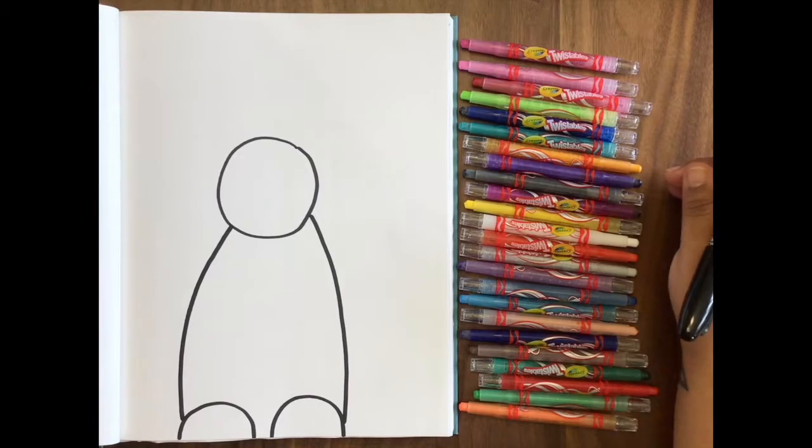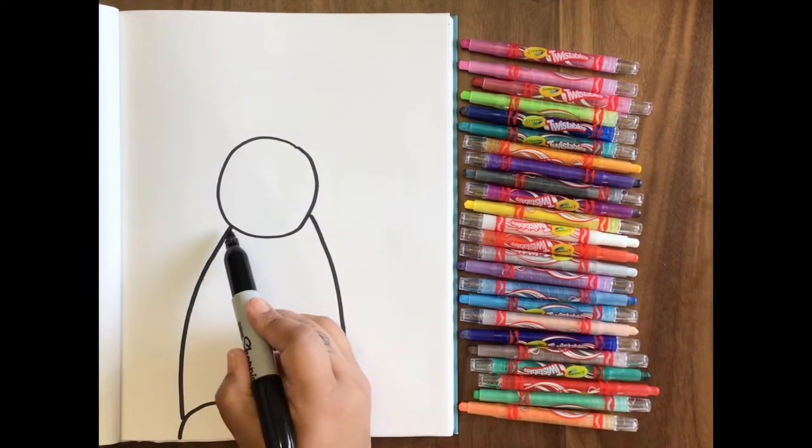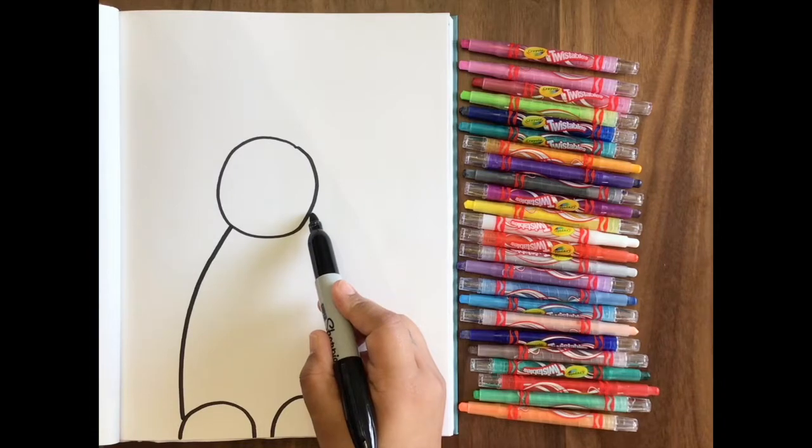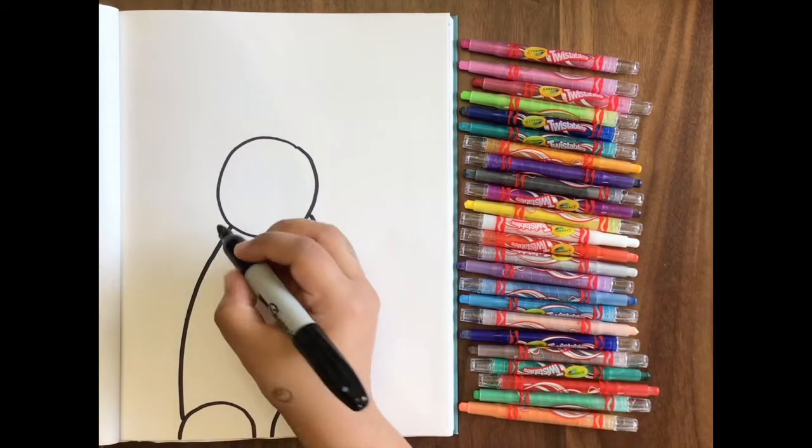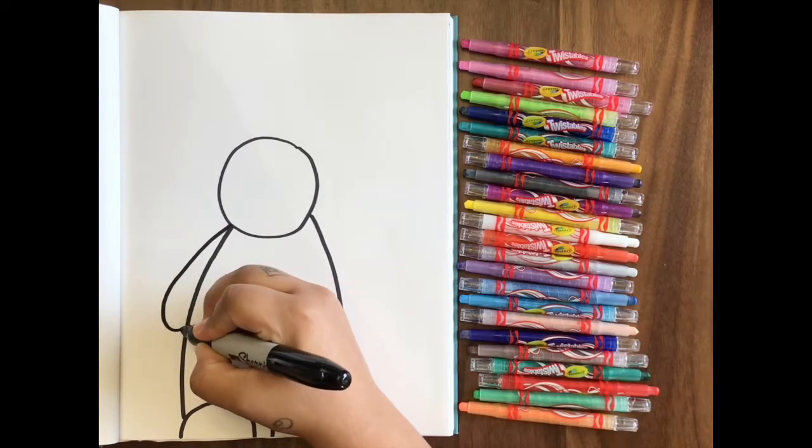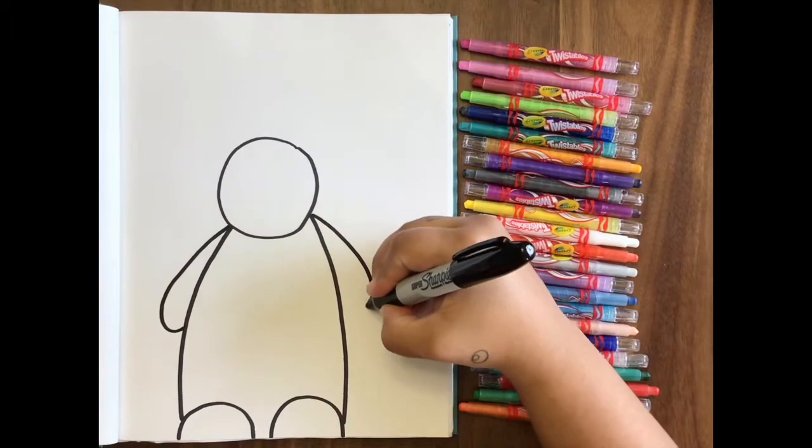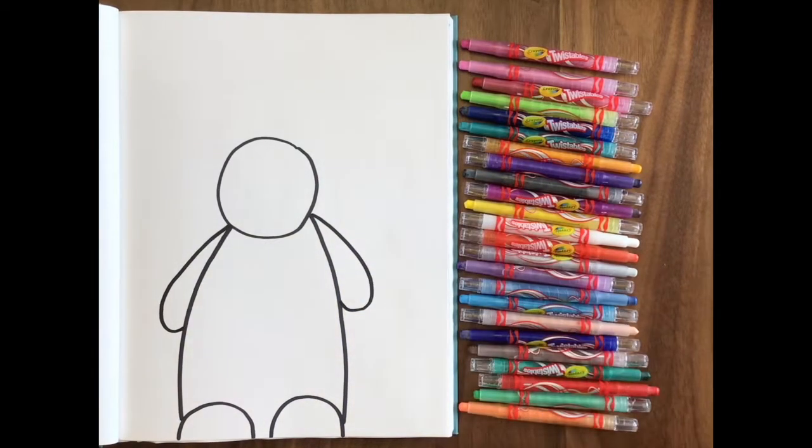The next thing we're going to do is we're going to make two little hands. Now instead of using circles or fingers like we would do for a person, I'm going to show you an easy way to try to make two little bunny hands. So what I'm going to do is I'm going to start over here where the curved line meets my circle for my head. And I'm going to go around and make a little hand. So I go out a little bit and swing right back in, just like that.